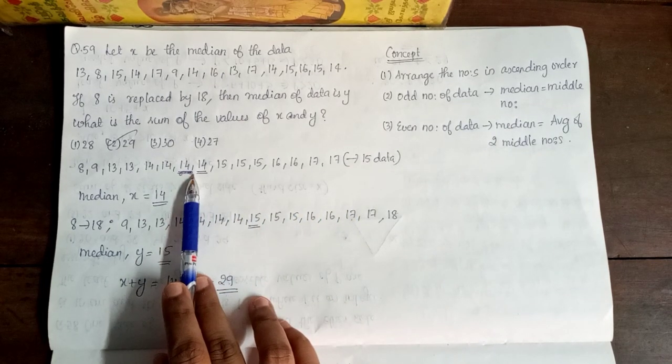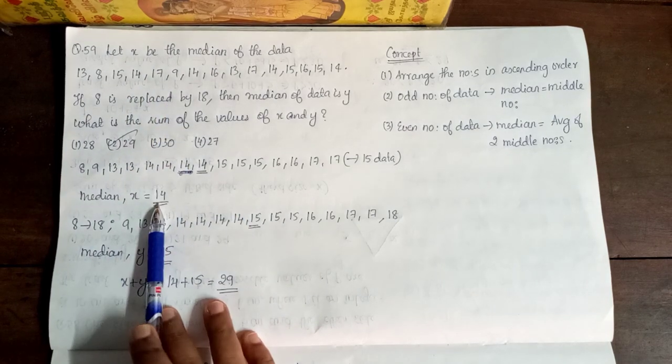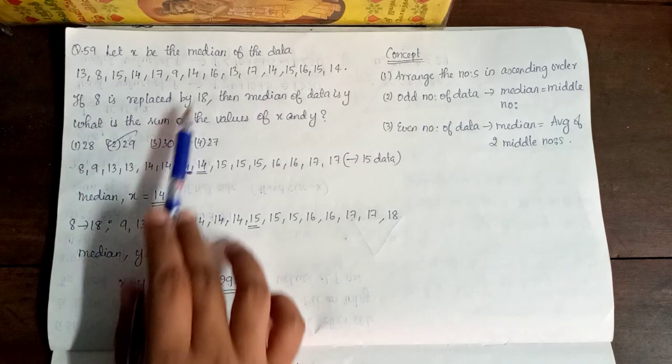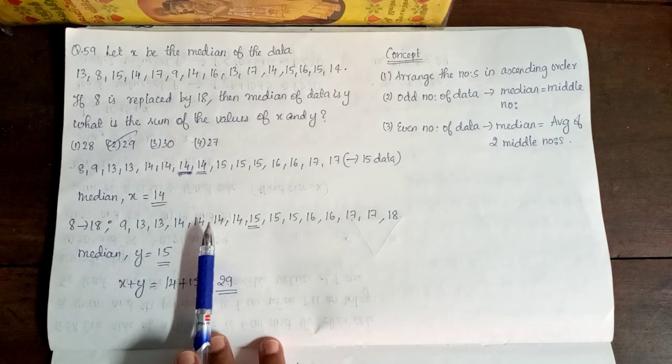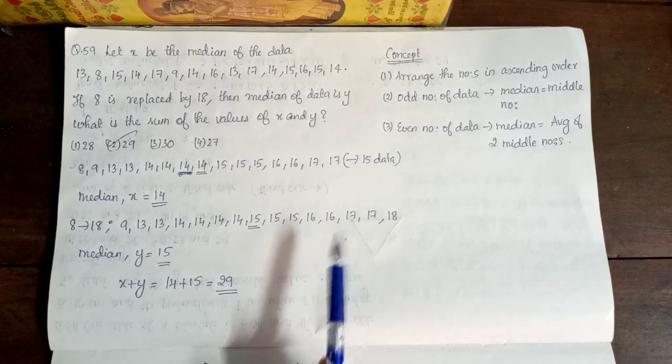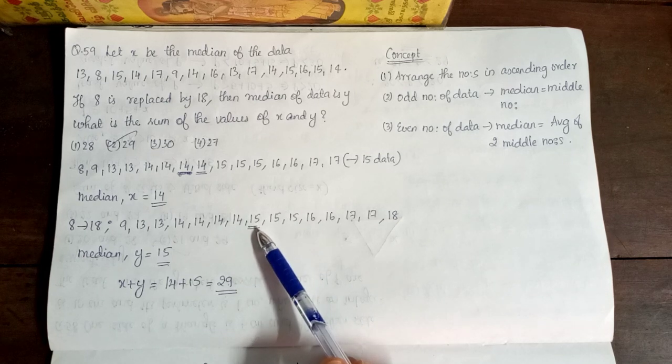So, x is equal to 14. So, again, we are going to replace the median. Now, I am going to replace the median. As for you, I will arrange the median as middle number. That is 15.